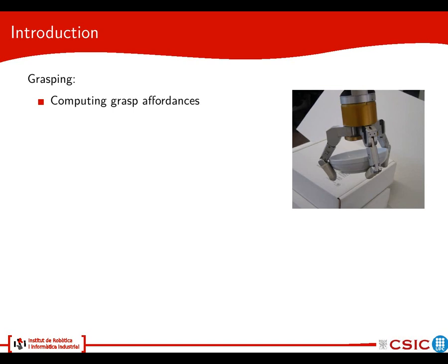Grasping is a very important ability for domestic robots that have to perform tasks in unstructured environments, and it mainly deals with computing grasp affordances with objects that we have detected in the environment. So, if we have the 3D model of the object and we can find the six degrees of freedom relating that model with the object detected in the environment, we can know what is the best place to grasp this object from.